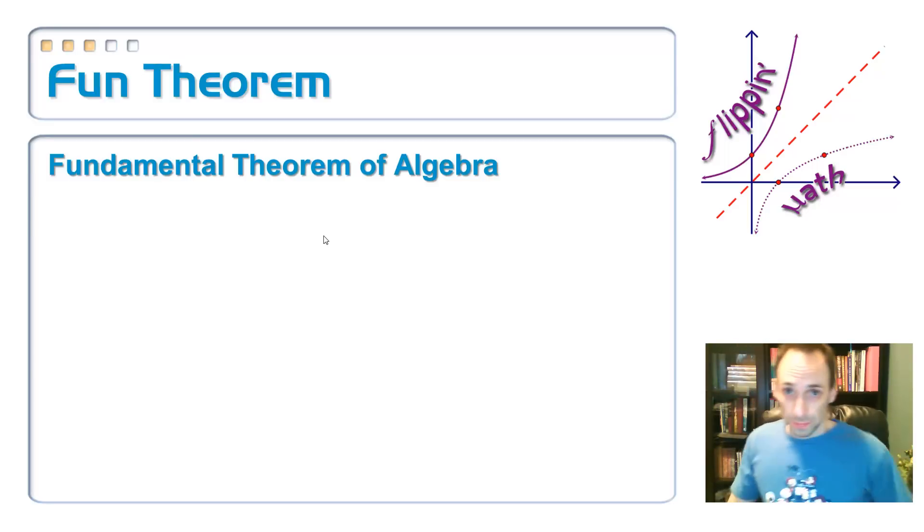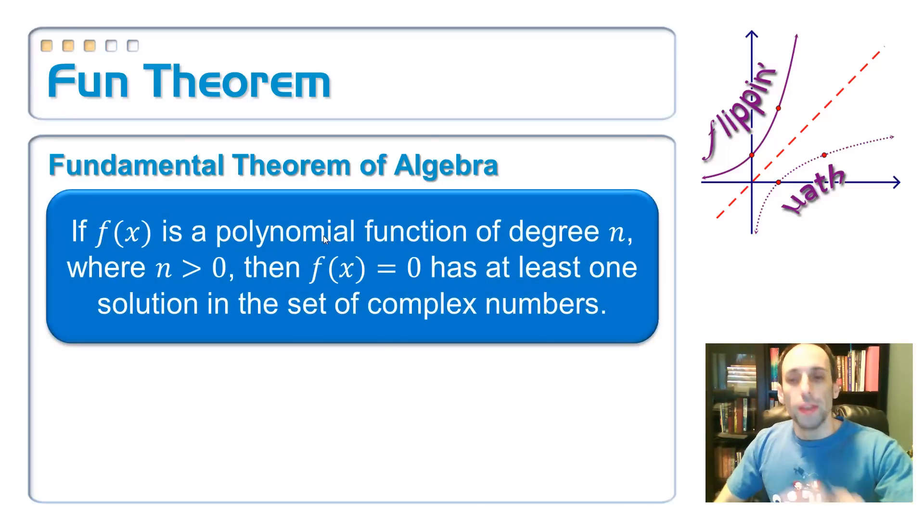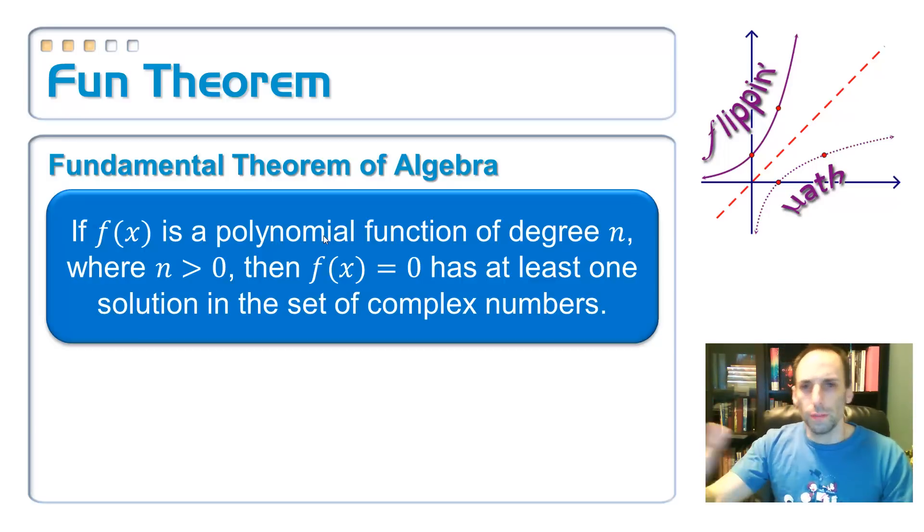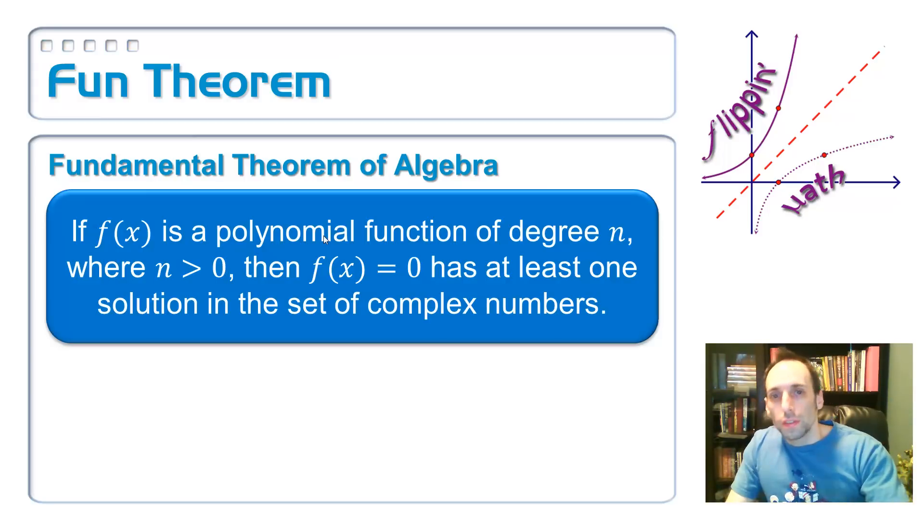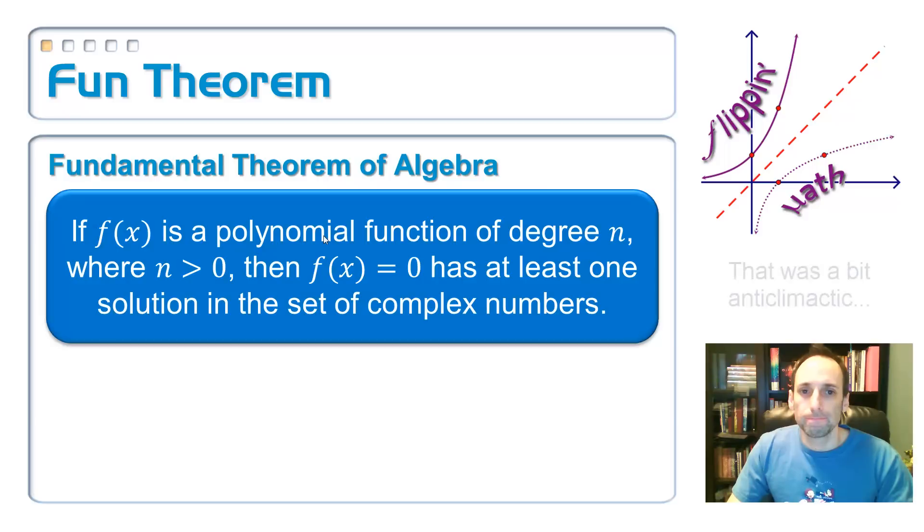So here is, finally, finally, the fundamental theorem of algebra. Please, please sit tight, pay attention. Here we go. Now, if f of x is a polynomial function of degree n, so in other words, it has fifth degree, fourth degree, whatever, where n is positive, of course n is positive, it's a polynomial degree, right? Then f of x has, you ready for it? At least one zero in the set of complex numbers. Just at least one, that's it? That's all it says? That's all it says.